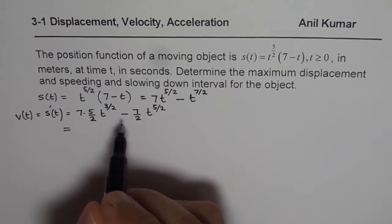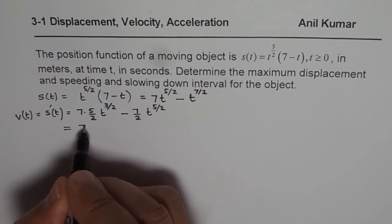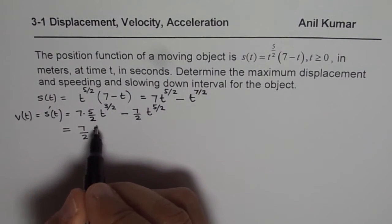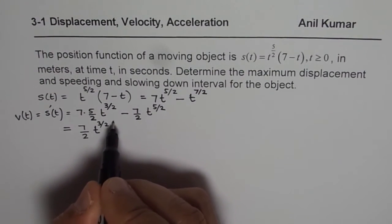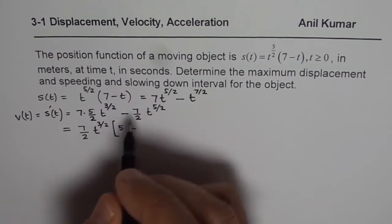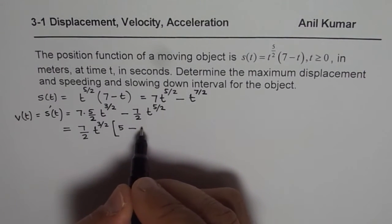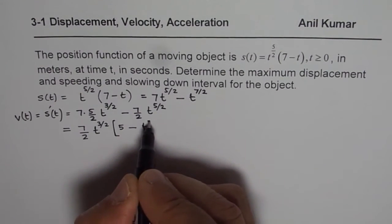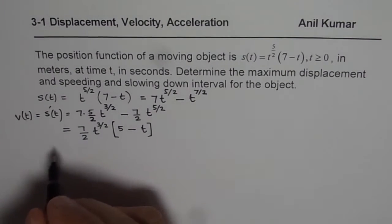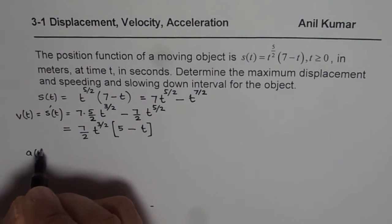Now we can take a common factor from the velocity expression. 7/2 is a common factor, and t^(3/2) is the lower power, so we factor those out. Inside we get 5 - t, since (5/2 - 3/2) = 1, giving t. So the velocity is: v(t) = (7/2) * t^(3/2) * (5 - t). Now let us find the acceleration as well.